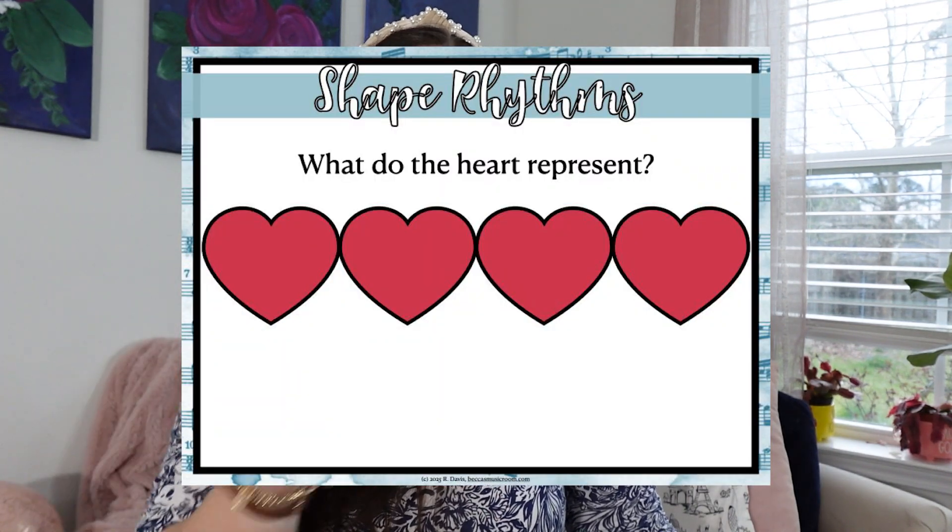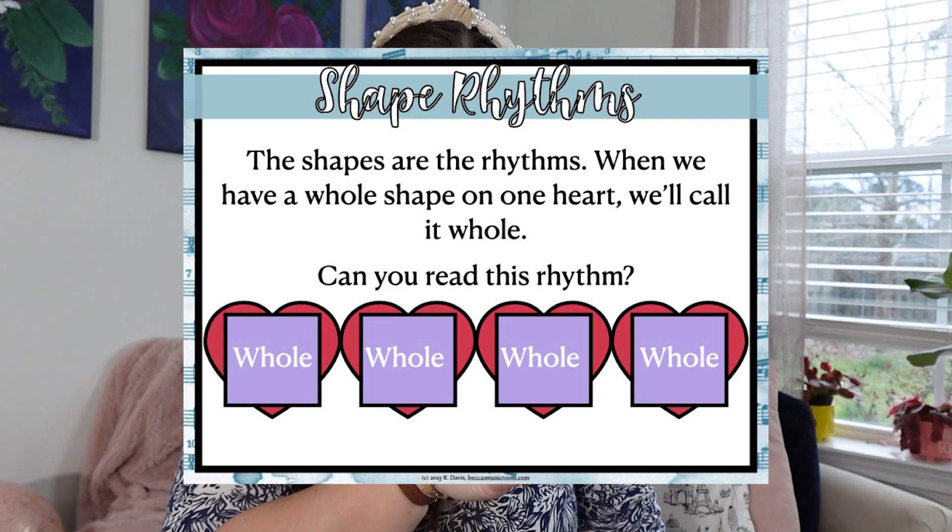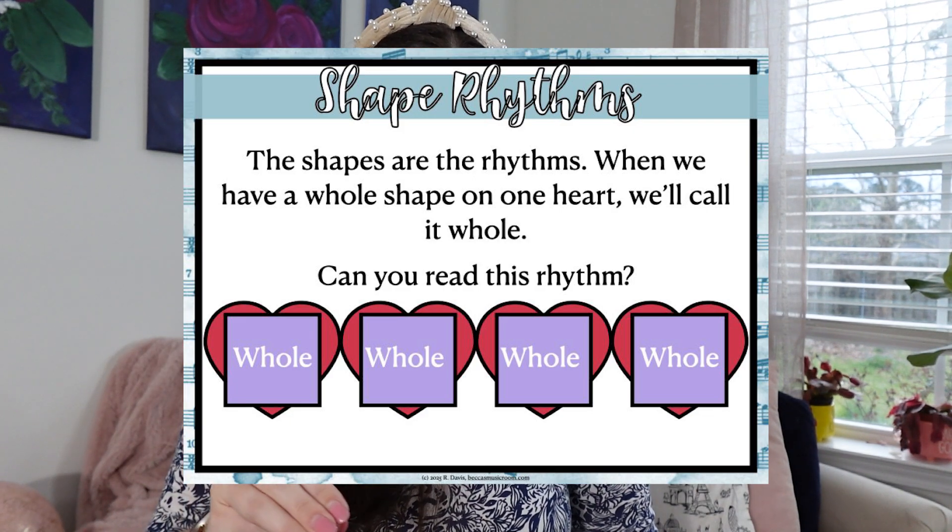From a musical standpoint, we start by keeping the beat — either listening to or singing a song and keeping the beat on our bodies. We've been using 'Mouse Mousie' because that's what we've been working on, but you can use anything. After we keep the beat on our bodies, I put up on the screen some hearts where students tap along with the beat. I ask what the hearts represent, and they say 'the beat.' Then I show a slide with whole squares on top of the hearts and explain that the shapes represent the rhythm.